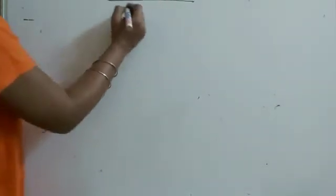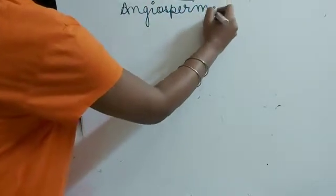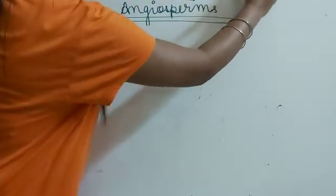Good morning, my name is Harpreet Kaur and I am from Nalanda Classes. Today we will be discussing a topic of biology — the typical structure and anatomy of angiosperms. When we talk about angiosperms, the first thing that comes to mind is a flower. A flower is an angiosperm. Angiosperms are actually flowering plants.